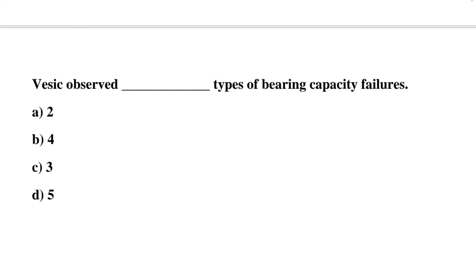Next question: Vesic observed how many types of bearing capacity failures? Option A: 2, Option B: 4, Option C: 3, Option D: 5. The correct answer is Option C, 3.